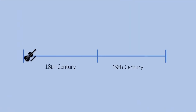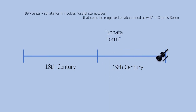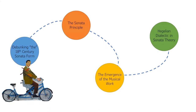Rosen therefore argues that we should think of sonata form in the 18th century as consisting of useful stereotypes that could be employed or abandoned at will. In fact, it wasn't until the 19th century that a unified idea of sonata form emerged, and that the term sonata form was even invented. Nevertheless, in another area of discussion, we come across the sonata principle, as it's been called, which is an attempt to unify sonatas under a common light.